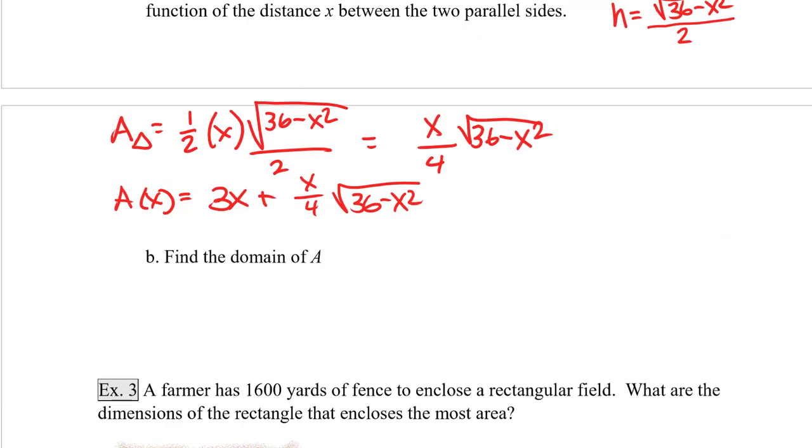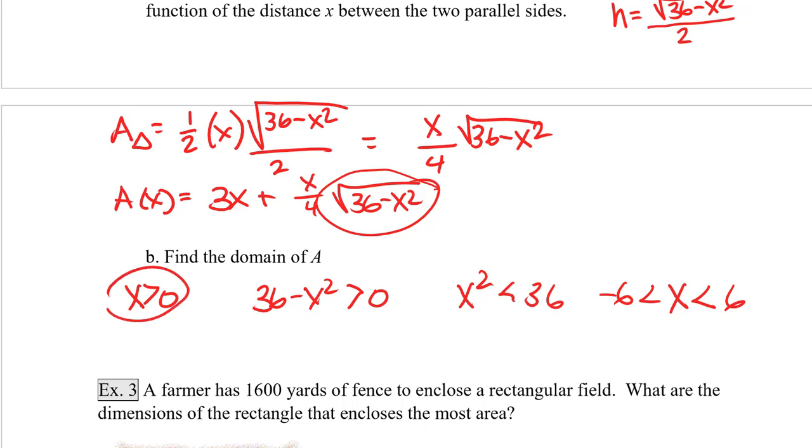Part B, find the domain of A. Well, we know that x has got to be greater than 0, otherwise the rectangle will have no area. So we know x must be greater than 0, but we also have a part of the height that's underneath the radical. And in order for this to give us a real number, what's underneath the radical, 36 minus x squared, has got to be a positive number. So if I were to simplify this, I would get that x squared has to be less than 36. And if I take the square root of both sides, I find that x must be between 6 and negative 6. So if I combine this with this, I get that the domain must be x such that x has to be between 0 and 6.